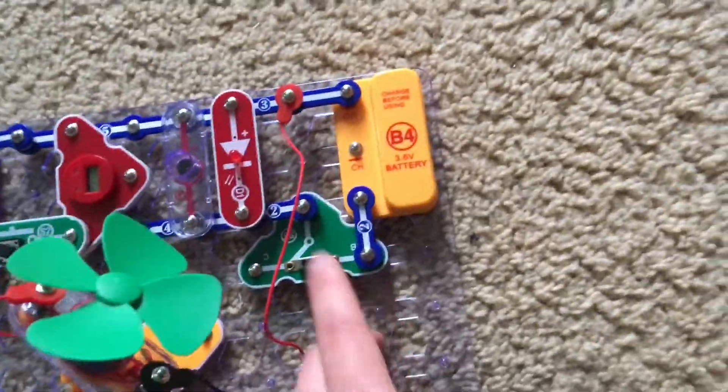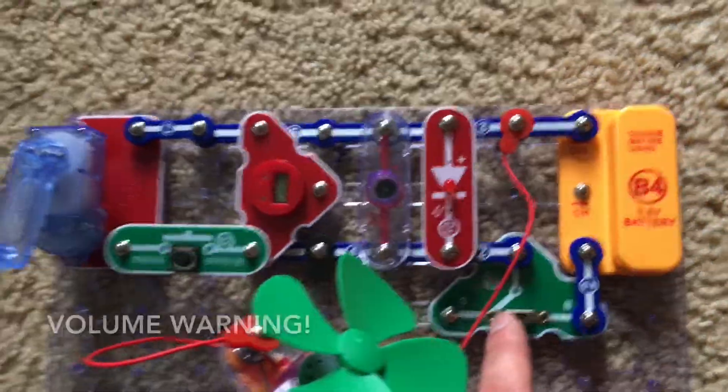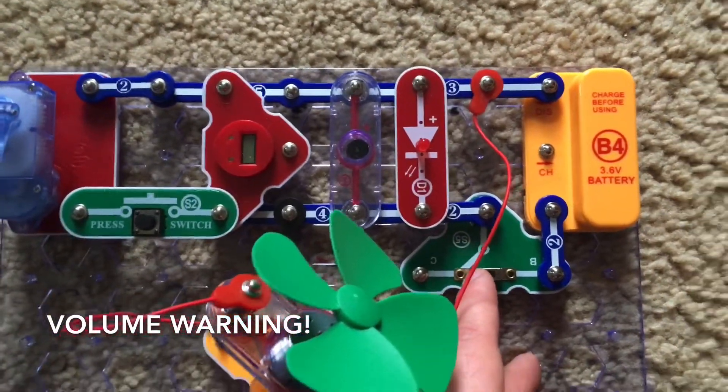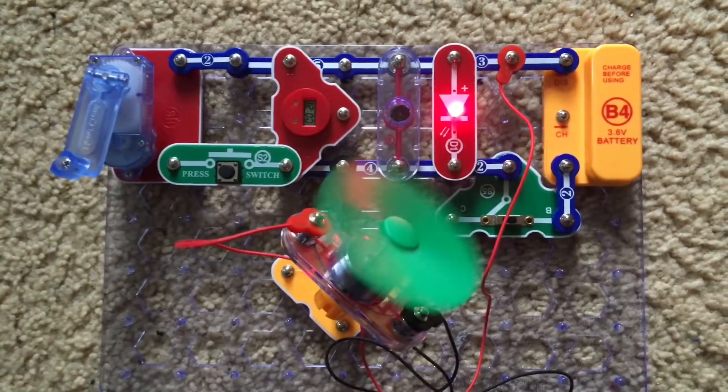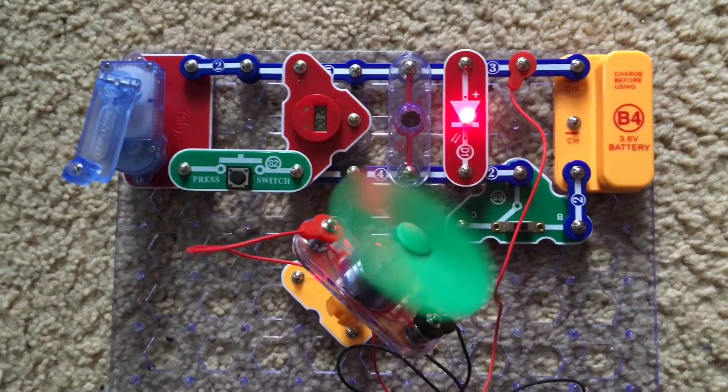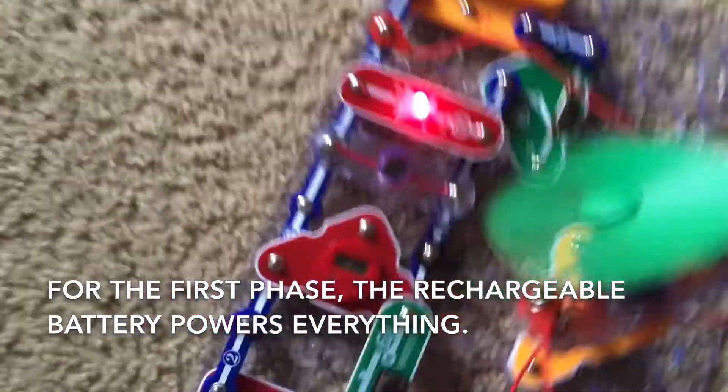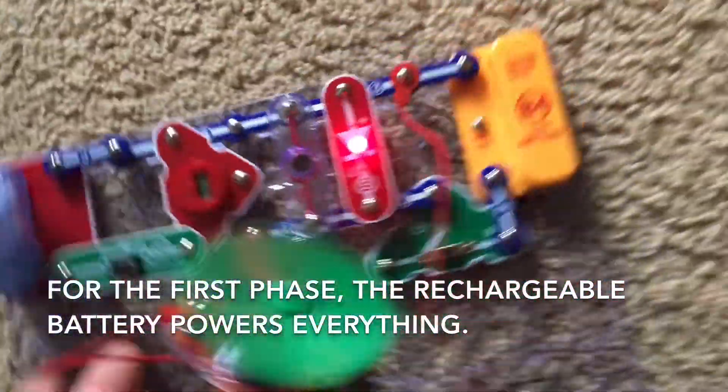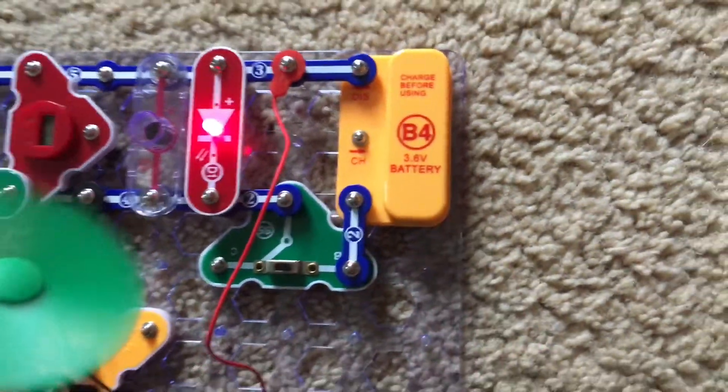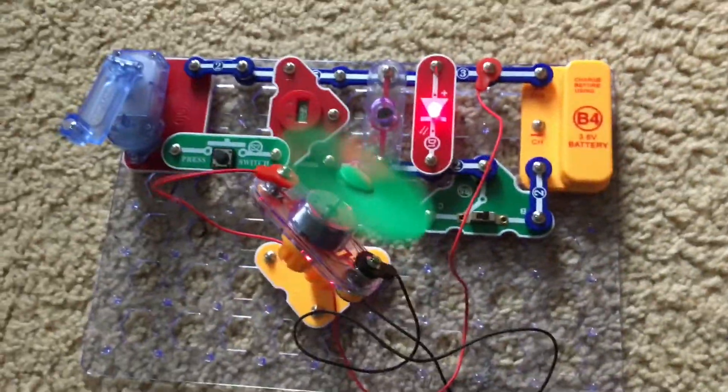For the first phase of this project we will turn on the slide switch. Please turn down your volume because the horn will be loud. And when I turn it on the red LED, horn, motor, and clock all come on. The rechargeable battery here is powering everything in the circuit.